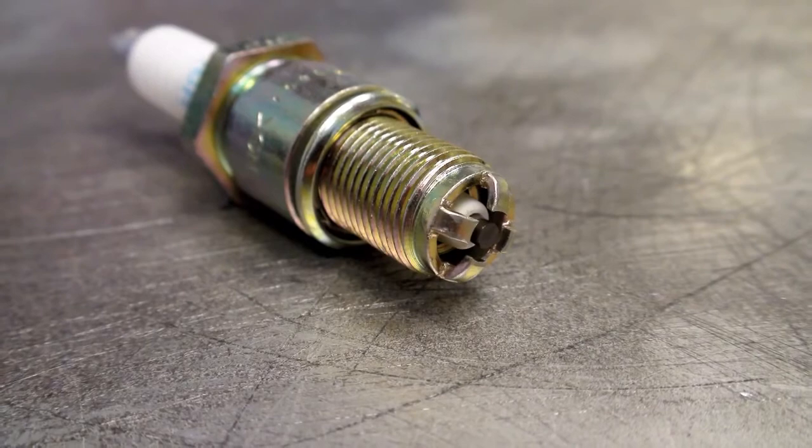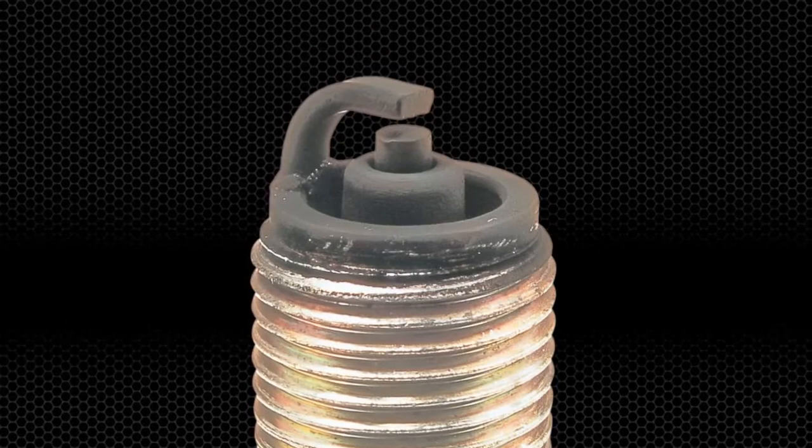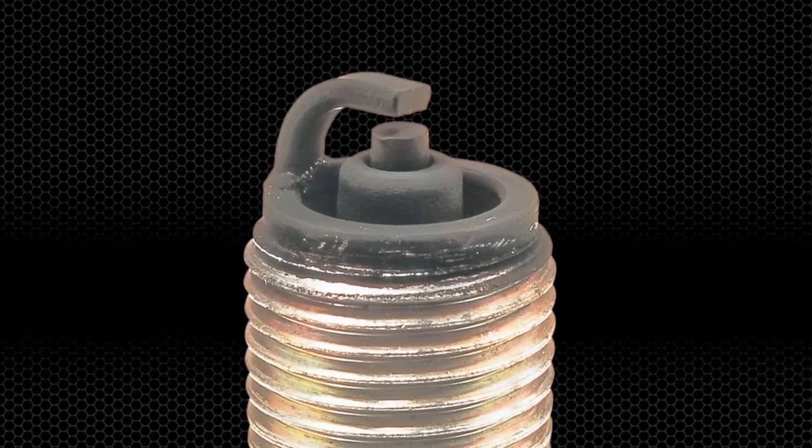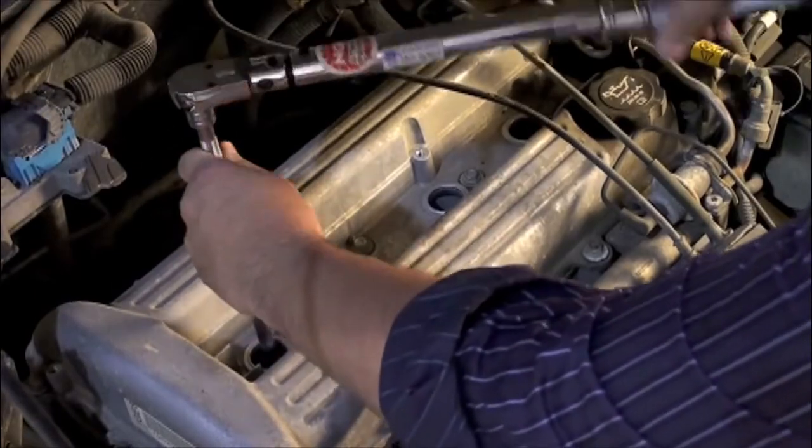The multiple ground electrode design was first used to aid in preventing carbon fouling. Other manufacturers later adopted this design to allow for longer spark plug change intervals due to the more even dispersion of spark plug wear.